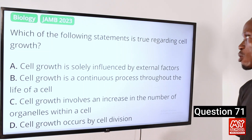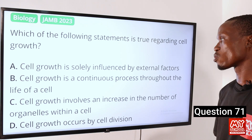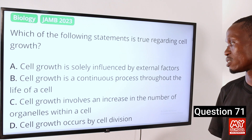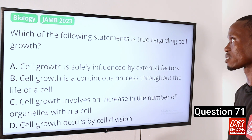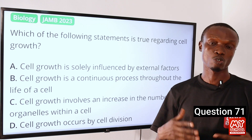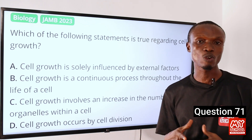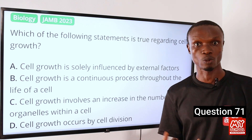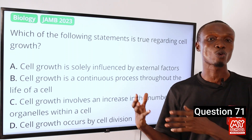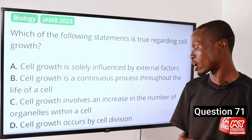Question 71: Which of the following statements is true regarding cell growth? A: Cell growth is solely influenced by standard factors. B: Cell growth is a continuous process through the life of a cell. C: Cell growth involves an increase in the number of organelles within a cell. D: Cell growth occurs by cell division. The correct answer is option D. Cell growth simply refers to an increase in cell size or mass over time, and it occurs by cell division. Cells undergo division to increase their number and contribute to overall growth in tissues and organisms. So option D is the correct option.